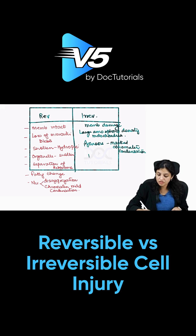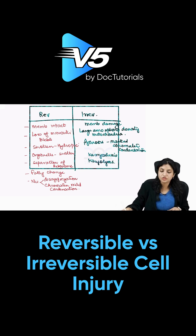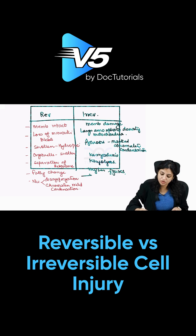Then there is karyorrhexis, which is fragmentation of the nucleus, and karyolysis, where the nucleus completely dissolves. These are classical features of irreversible cell injury you should be very clear on. Do not forget myelin figures — myelin figures are predominantly seen in irreversible injury but can also be seen in reversible injury.